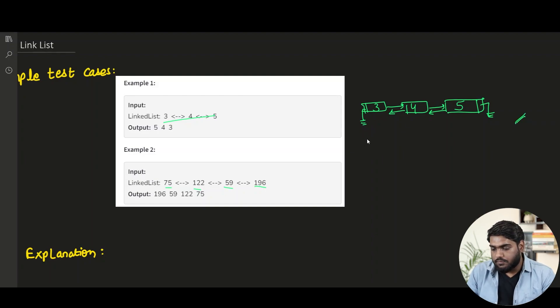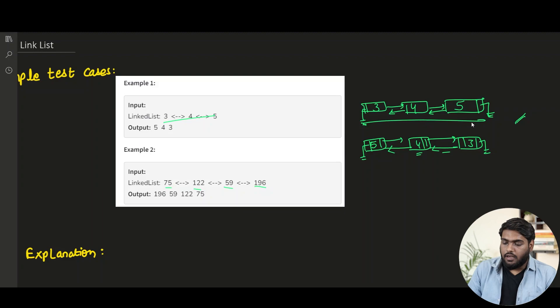Now if we reverse this, what will be the answer? The three nodes will be there. Five will come here, four will be here and three will be here. This time, notice, this is going to be null because three has become the tail, the last element and five is the new head. Five's previous will be becoming null and all the other links will be changed accordingly. That means now three is pointing towards four in the previous and similarly four's next has become three. So we understand the task that what we have to do.